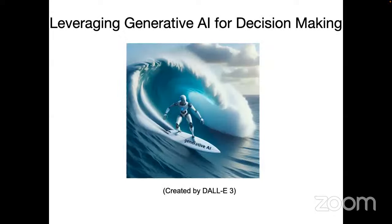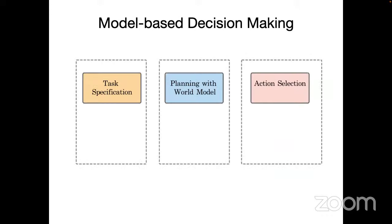The question we're going to present is: how can you use generative AI to improve decision-making? In traditional model-based decision-making, you have a world model, a task specification describing what you want to do, and something that infers actions to plan trajectories to reach your task.